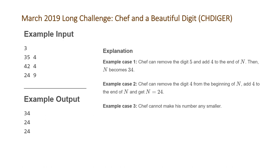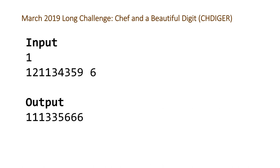We're going to take a look at a different example that should inform the algorithm more. The number is 121134359 with a favorite digit of 6, and the result will be 111335666. Comparing the two, you'll notice that we removed three digits: the 2, the 4, and the 9. Because we removed three digits, we add our favorite digit 6 to the end three times.